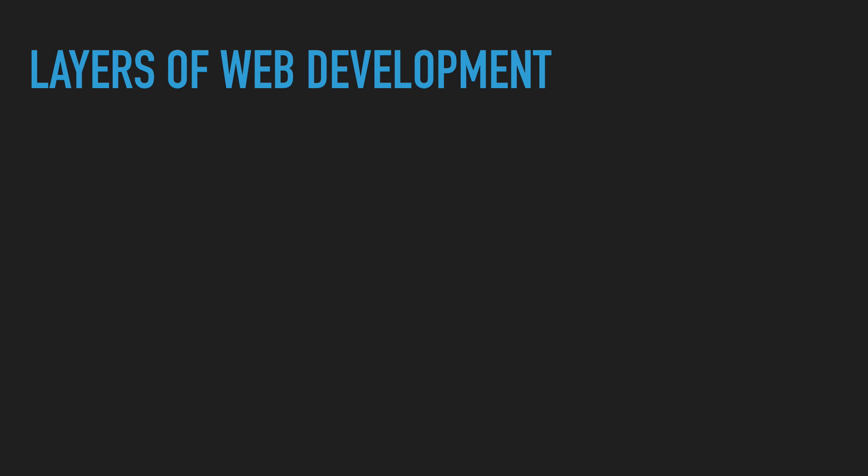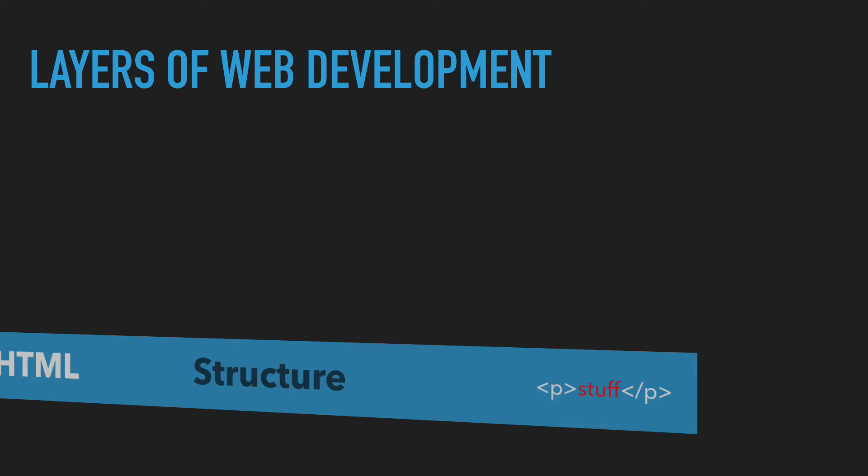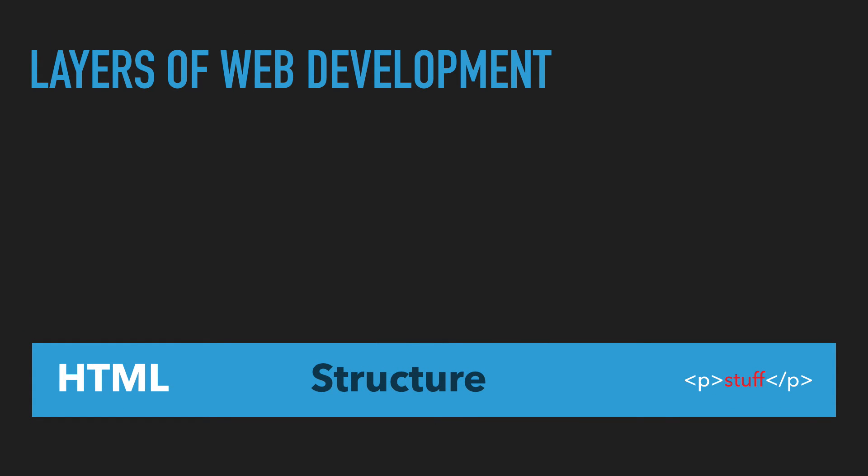So let's talk about what is known as the layers of web development. The first layer of web development is the structure layer, and that is commonly known as the HTML code. The HTML code creates elements that are available on the page. For example, on the right here, this code is a P tag closed with another P tag, which represents a paragraph. The paragraph then has text inside the middle of it — the text reads 'stuff.'